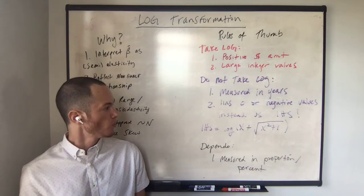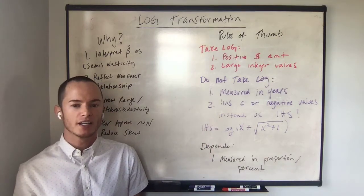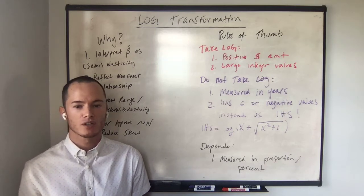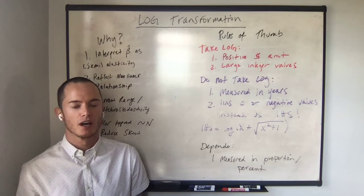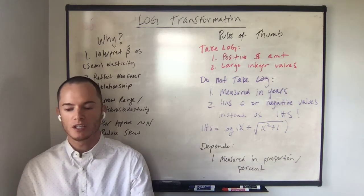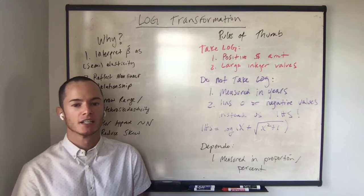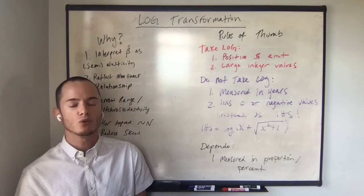Number two, we're not going to take the log when the variable takes the value zero or takes negative values. In that case, the log of zero or the log of a negative value is undefined, and so we would lose that observation.